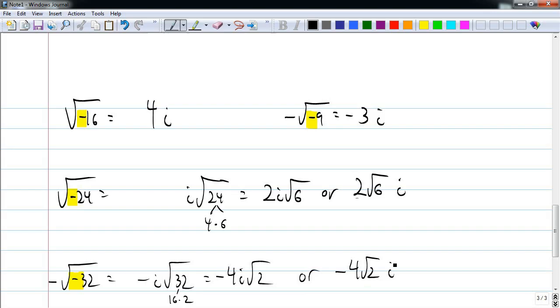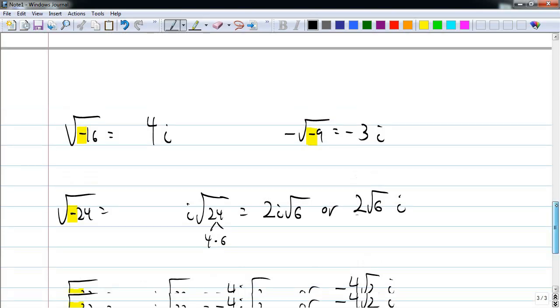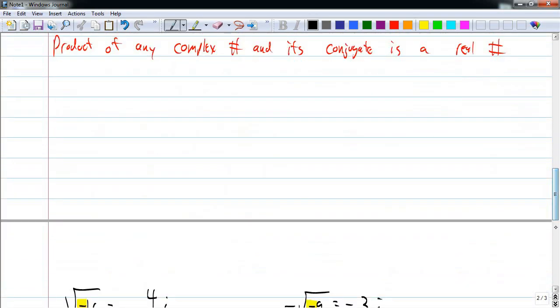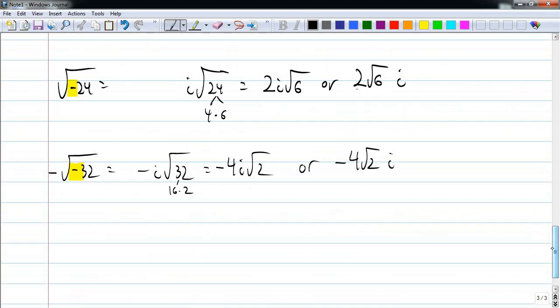So yeah. There we go. Dividing radicals and multiplying with the conjugate. And then taking square roots of negative numbers. And how you end up with i. That's all for the moment.